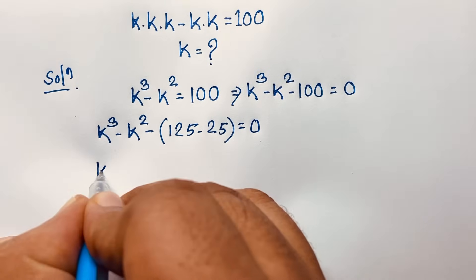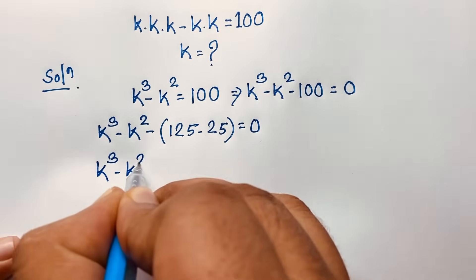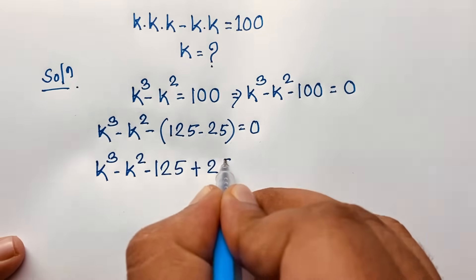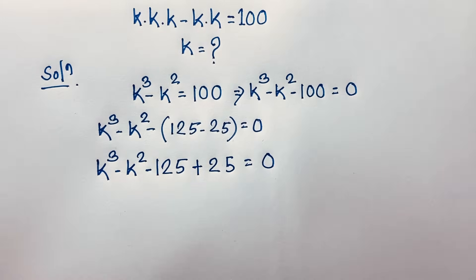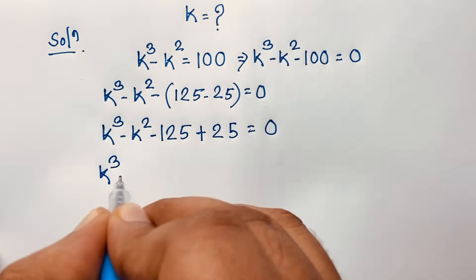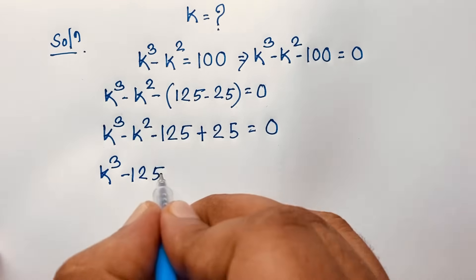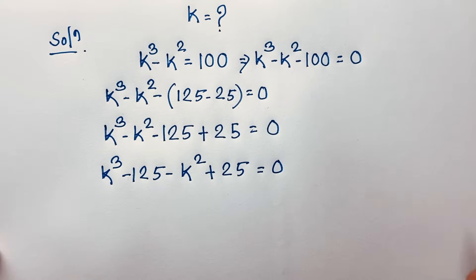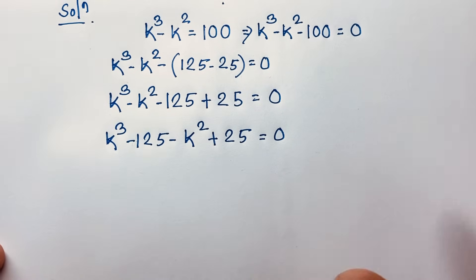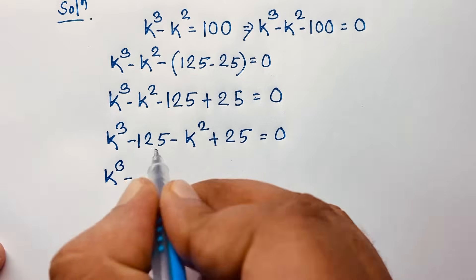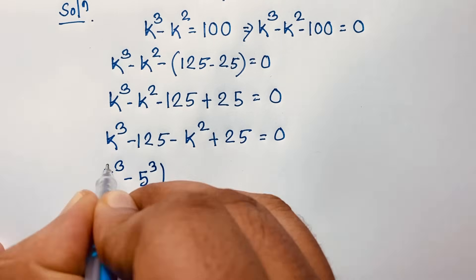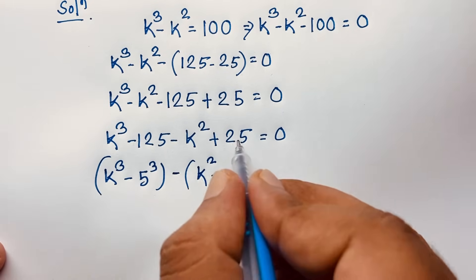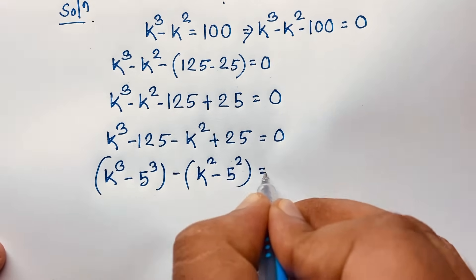At this moment, we rewrite: k to the power 3 minus k squared, then plus and minus — it will be minus 125, minus minus becomes plus 25, is equal to 0. Now we group: k to the power 3 minus 125, then minus k squared plus 25 is equal to 0. I solve this question step by step. So k to the power 3 minus 125 is 5 to the power 3, and taking minus sign as common gives k squared minus 5 to the power 2 is equal to 0.